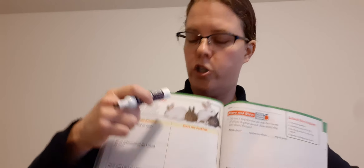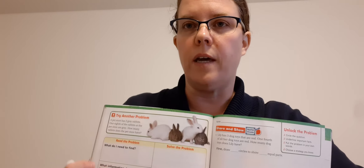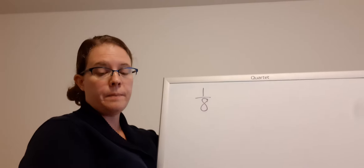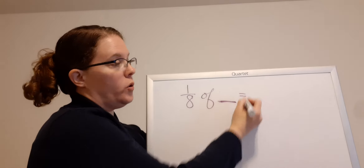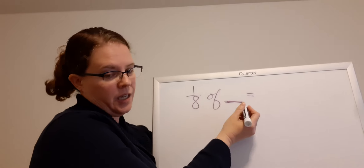Cross out all of this — we're just going to do the problem at the top. I want you to see where the bunnies are and write your answer in that space. So: a pet store has two gray rabbits. One eighth of the rabbits at the pet store are gray. How many rabbits does the pet store have? We have to look at our fraction — one eighth. So one eighth of the rabbits in the pet store are gray. There are two gray rabbits, but we don't know how many total rabbits they have in the pet store. So one eighth of something is going to equal two.